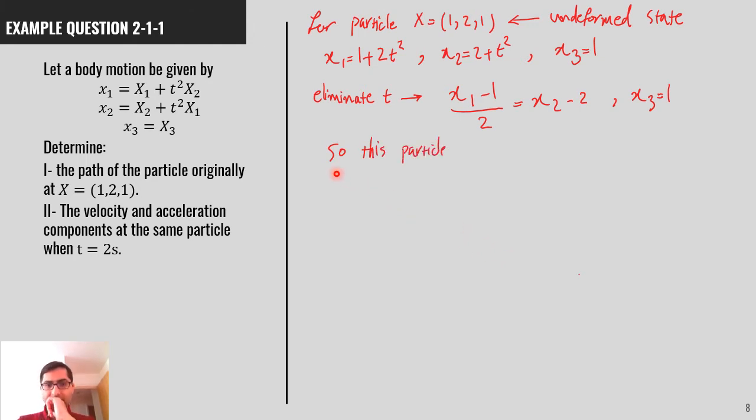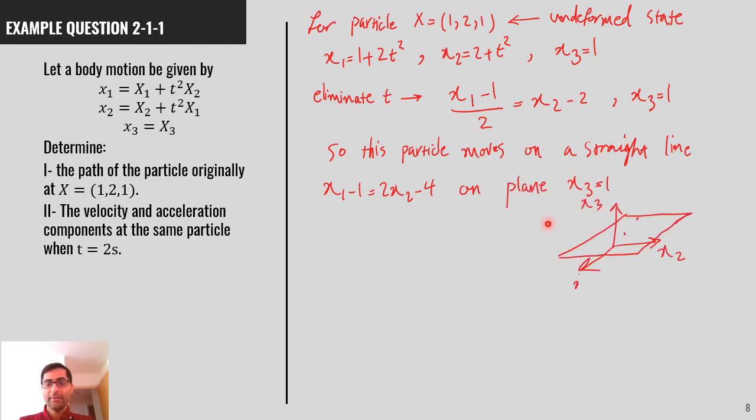So, basically, it says that the particle moves on a straight line. If you pay attention, this part of the equation is a straight line, and the equation for that straight line is x1 minus 1 equal to 2x2 minus 4. And it's on a plane with x3 being constant equal to 1.